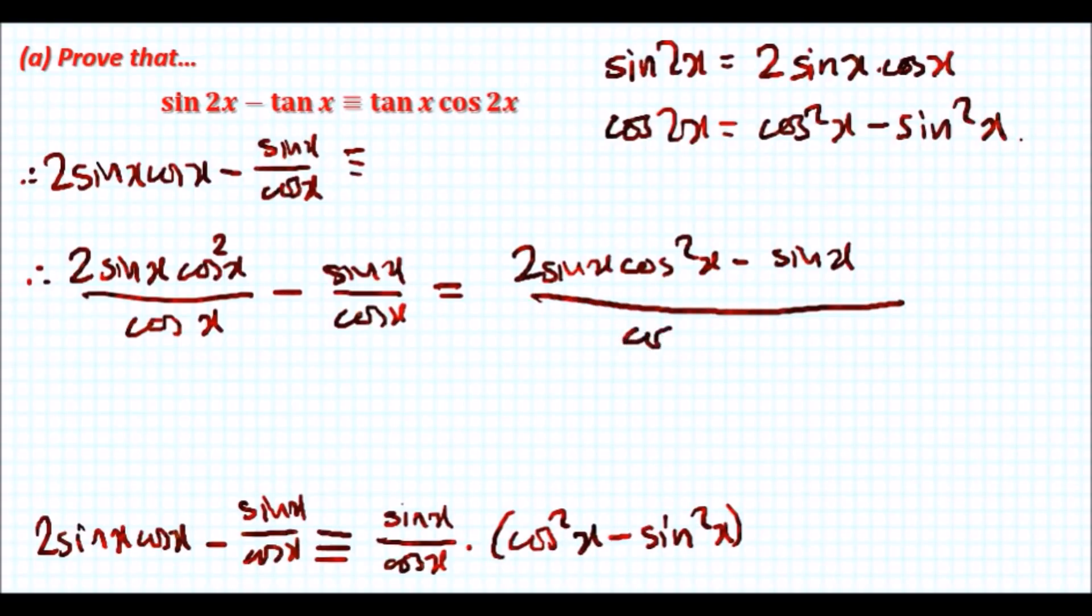Next, we can combine the terms here so everything will be over cos x. Before we get to this final last step here we need to observe, so here they somehow got cos squared minus sin squared.